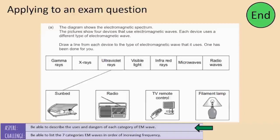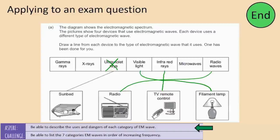The command word was 'draw a line'. It's draw a line from each device — there are three devices. One has been done for you, and each device uses a different type of EM wave. So none of the answers for the radio, TV remote, or filament lamp could be the same. You should have got: radio waves for the radio — a straightforward one. The TV remote control uses infrared, because infrared is used for communication and is non-visible. And the filament lamp uses visible light — because when you turn a light on, it increases visible light in the room, and that's the only part of the EM spectrum we can see.